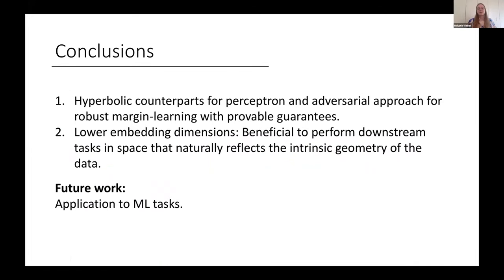So with that, to conclude, I talked about hyperbolic counterparts of the perceptron algorithm and introduced an adversarial approach for robust large margin learning in hyperbolic space with provable guarantees. And I talked about how a lower embedding dimension that we would achieve, for instance, for embedding hierarchical data into hyperbolic space could benefit us in downstream machine learning tasks and motivated that it's good to consider a space that naturally reflects the intrinsic geometry of the data to achieve superior guarantees in downstream tasks. Thank you.